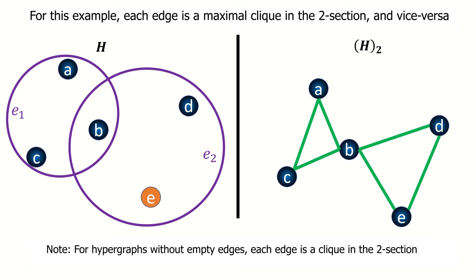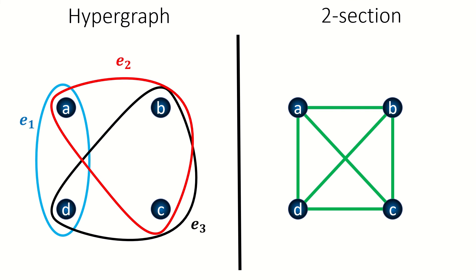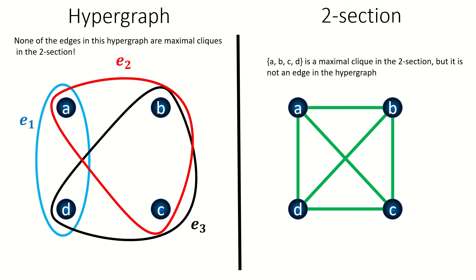However, it's not always the case that every edge in the hypergraph is a maximal clique in the two section, or that every maximal clique in the two section is an edge in the hypergraph, as you'll see in the following example. The two section has a maximal clique {a, b, c, d} that's not an edge in the hypergraph, and none of the edges in the hypergraph are maximal cliques in the two section. We'll look at this interesting relationship between maximal cliques and hypergraphs in a future video.